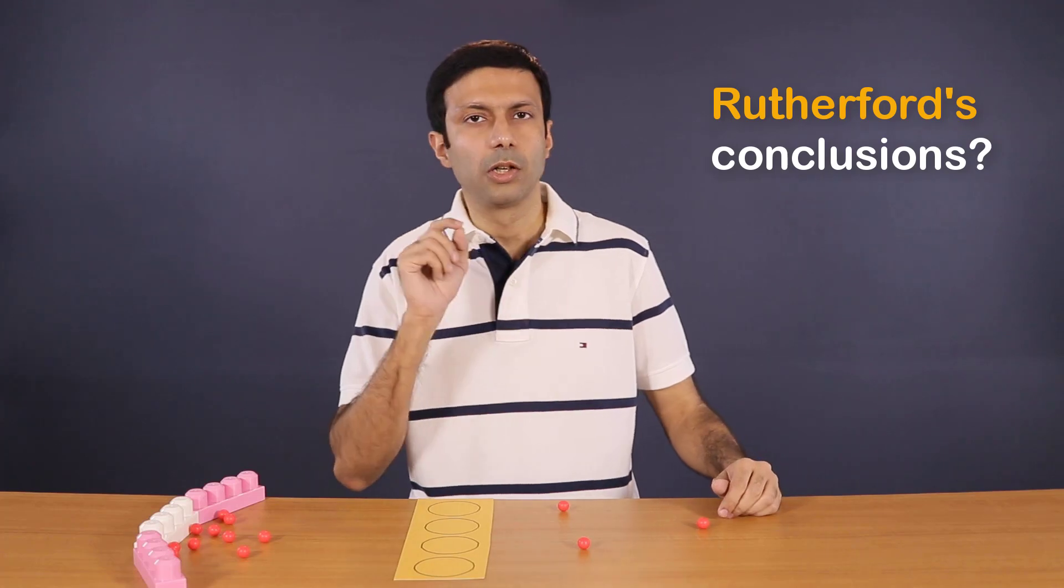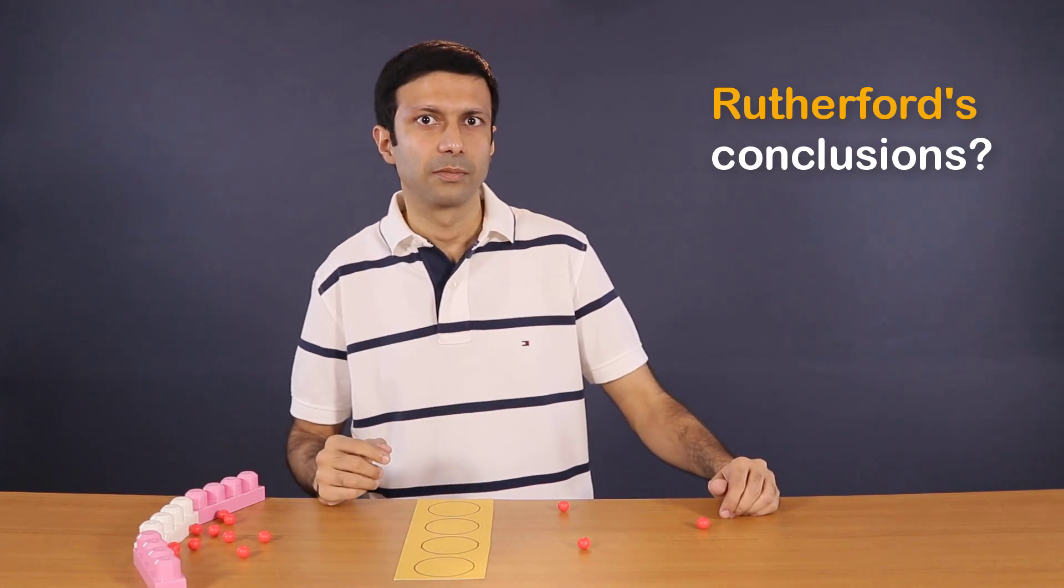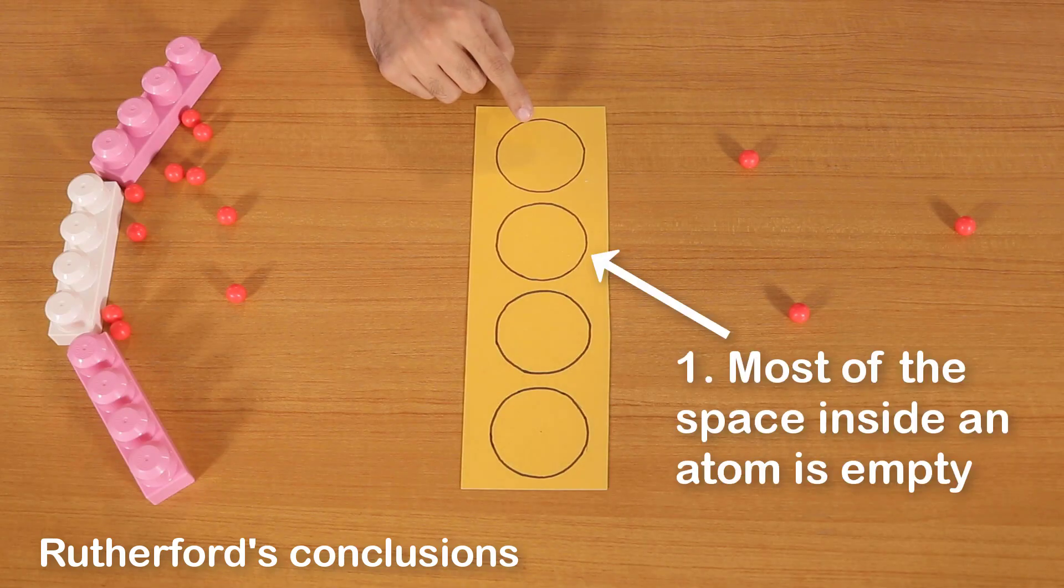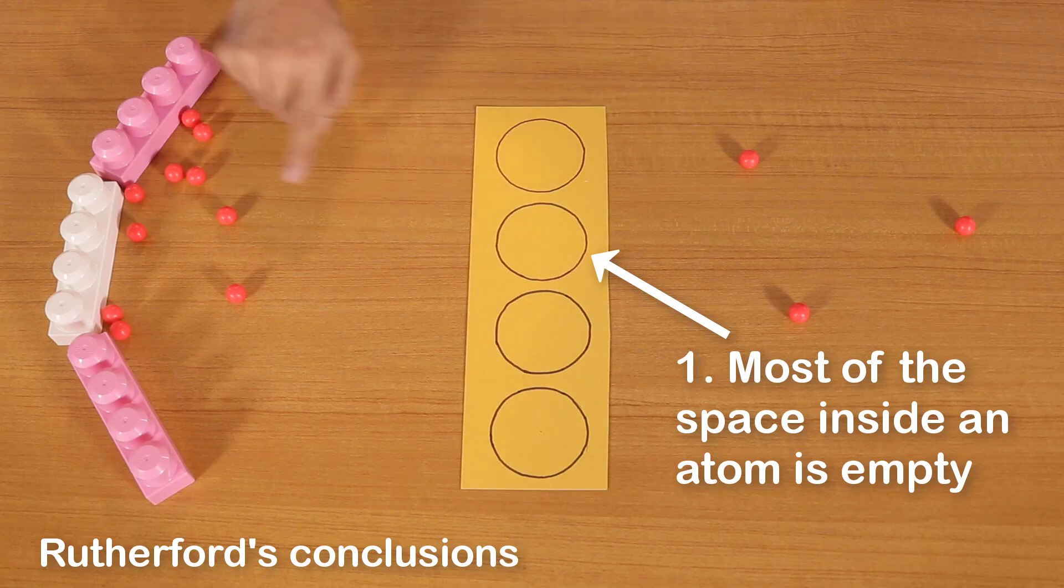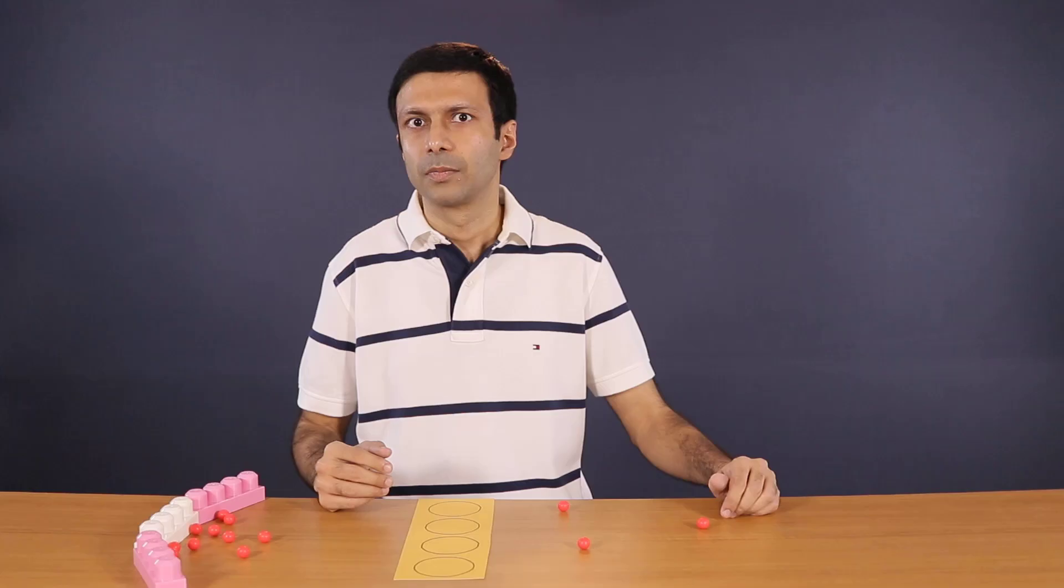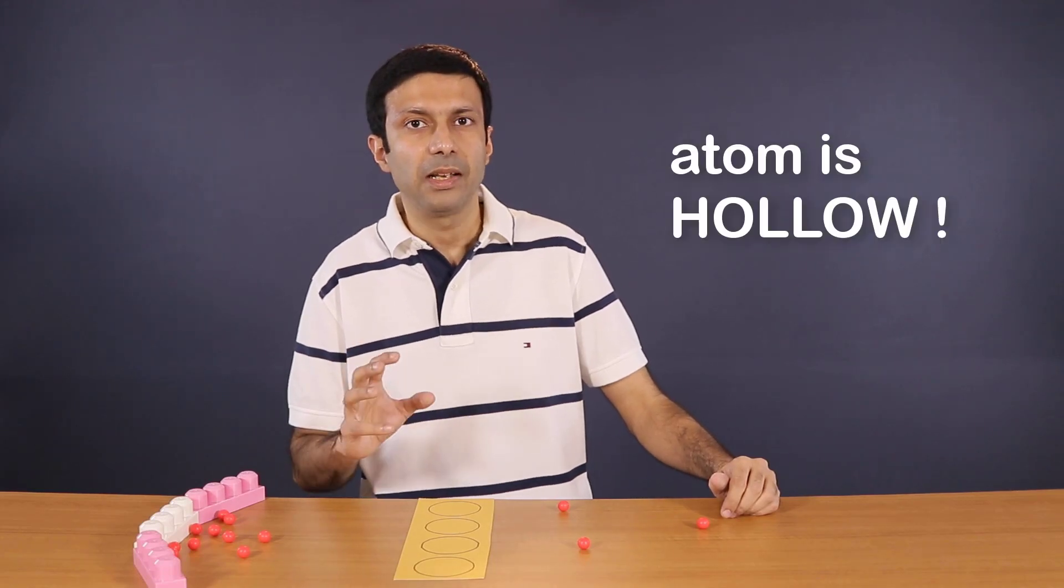Now what did Rutherford conclude from his observations? Most of the space inside an atom is empty. Because they observed that most of the alpha particles pass straight through without being deflected. So the atom is basically hollow.